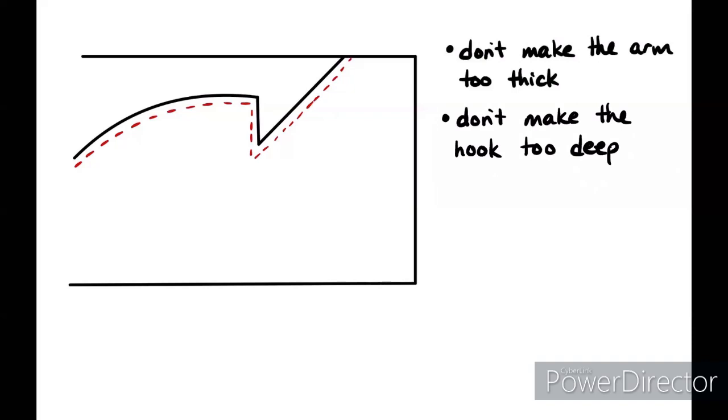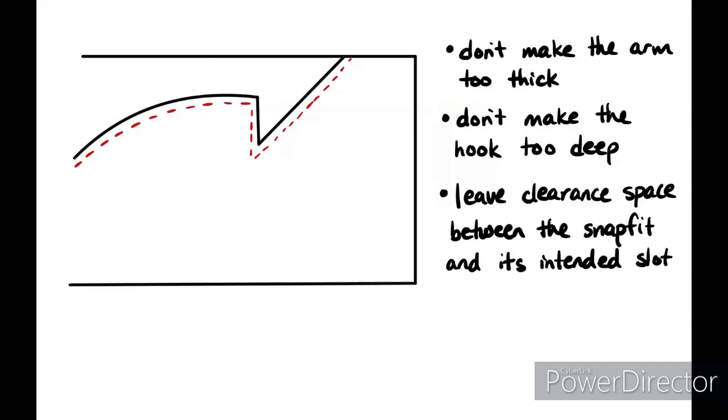Next, don't make your hook too deep. This all plays into the same principle. It needs to bend. So if you make your hook too deep, you're going to be asking it to bend too much a lot of times. And the more it bends, it might warp and it might not be able to snap back.